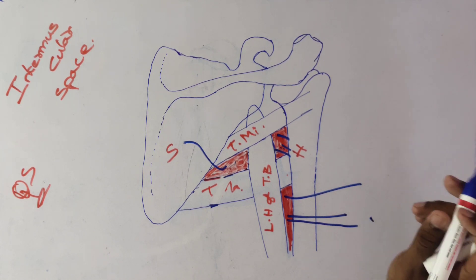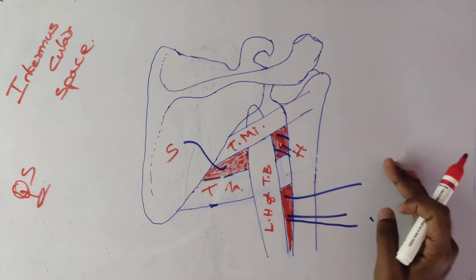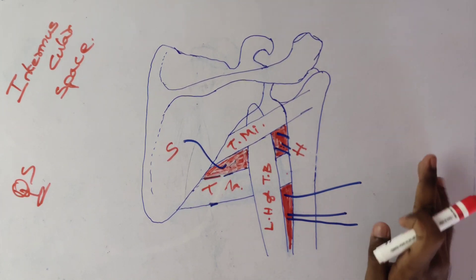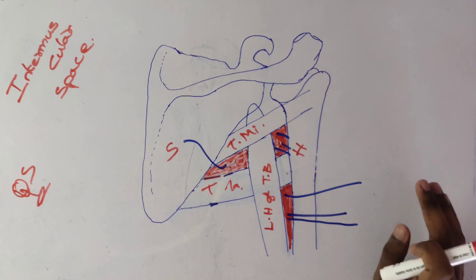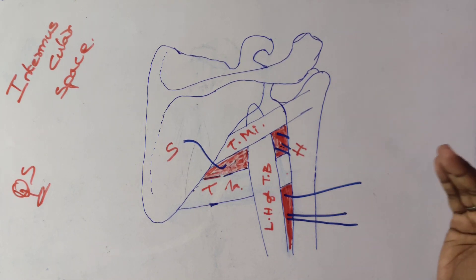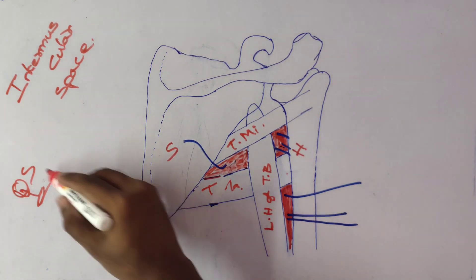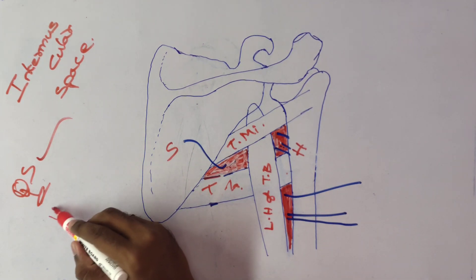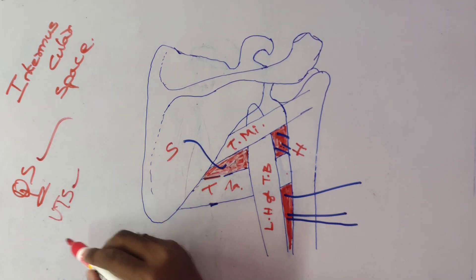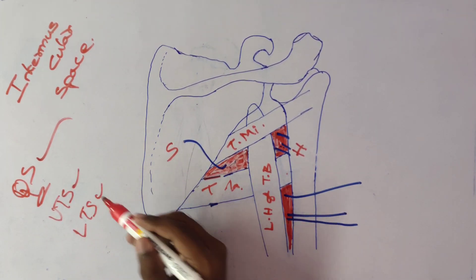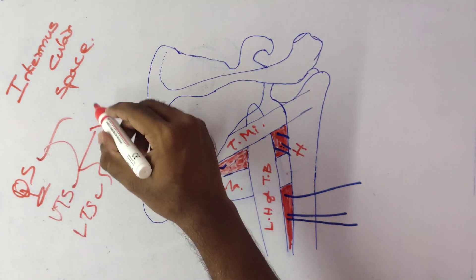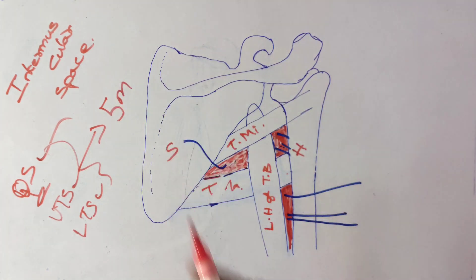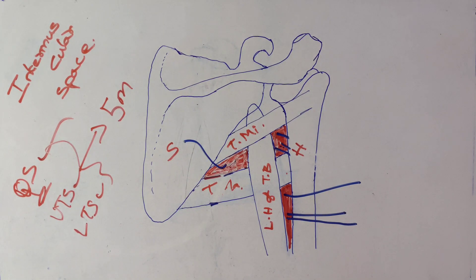This is all about today's class on intermuscular space. This topic is very important for two marks — the quadrangular space, upper triangular space, and lower triangular space are each worth two marks individually. By combining all three, they may also be asked for five marks. Thank you all; we will meet again tomorrow.